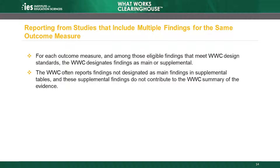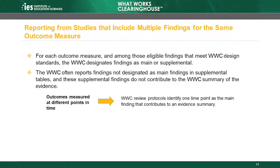The WWC follows a set of guidelines when distinguishing main and supplemental findings. When a study measures the effectiveness of an intervention at multiple points in time, such as immediately after the intervention concludes and again later, the WWC chooses one point in time to focus on as the main finding. For example, a review protocol in a topic area where effects can take time to observe might specify that the latest follow-up is preferred.